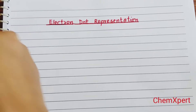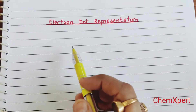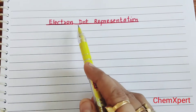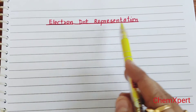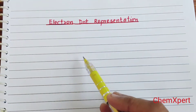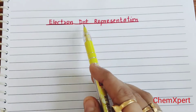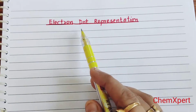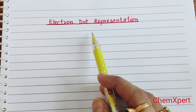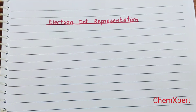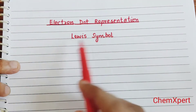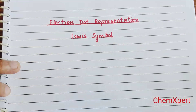In this video, we will discuss the important topic of class 10 science: the electron dot representation of the first 20 elements. This representation is very important for the formation of ionic compounds. This representation is also known as a Lewis symbol.